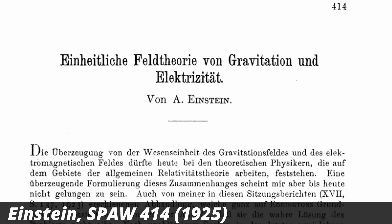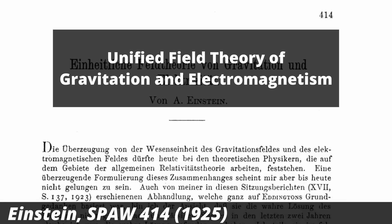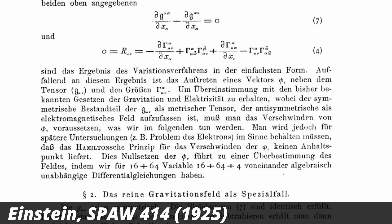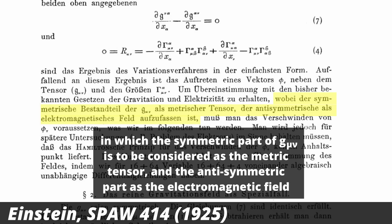In 1925, he publishes another paper in which he says that he's tried for two years to combine electromagnetism with gravity and it didn't work. He presents a new idea in which he says that the metric tensor could have an anti-symmetric part that might describe electromagnetism.